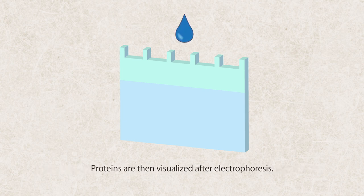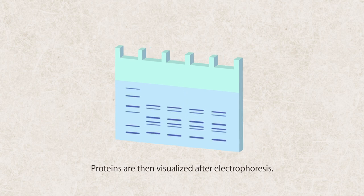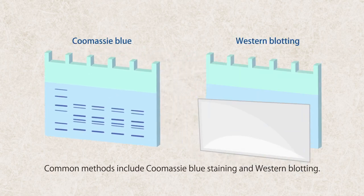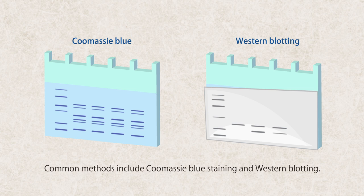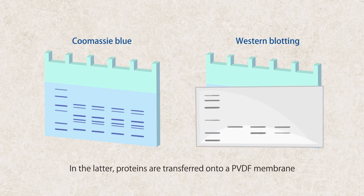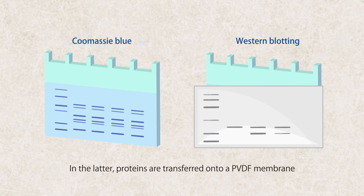Proteins are then visualized after electrophoresis. Common methods include Coomassie blue staining and western blotting. In the latter, proteins are transferred onto a PVDF membrane, and proteins of interest are detected with specific antibodies.